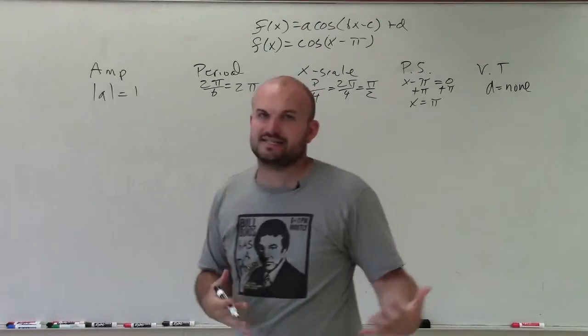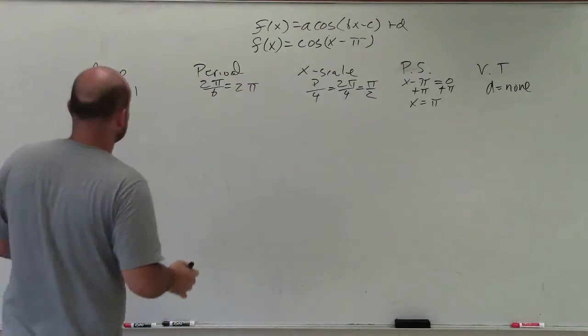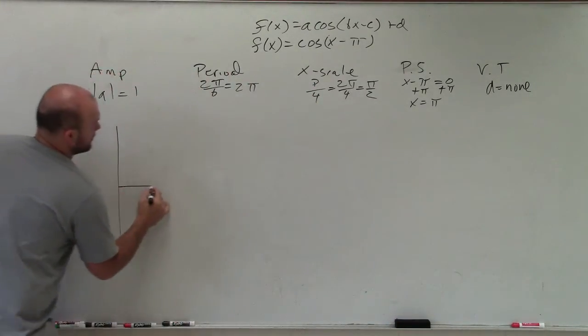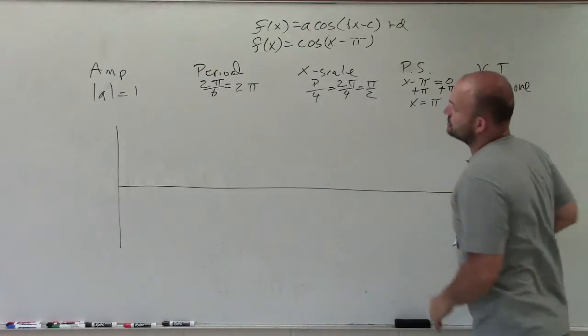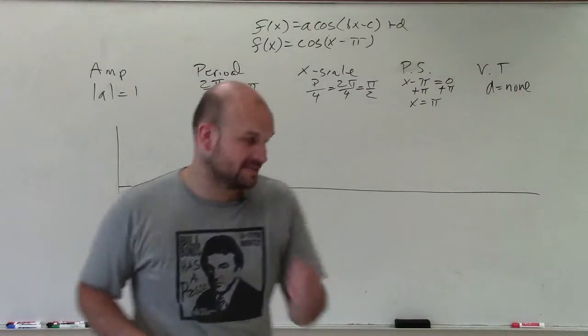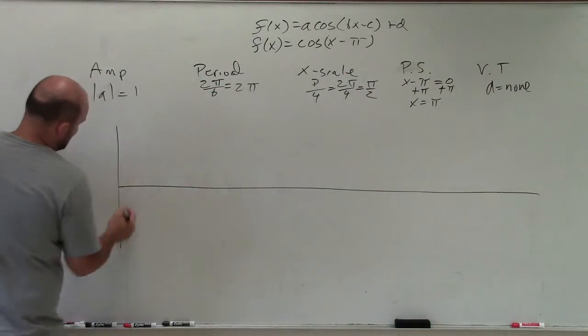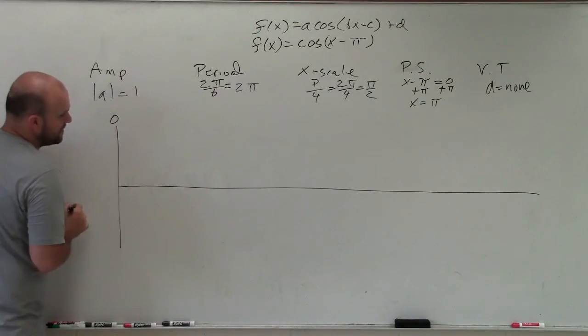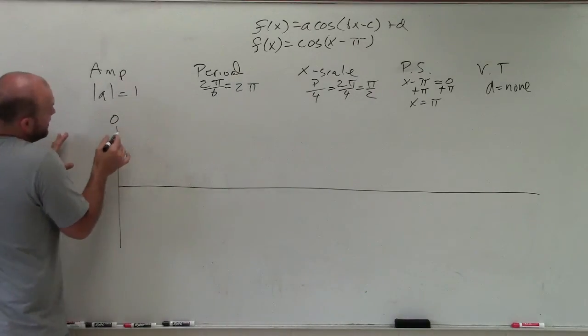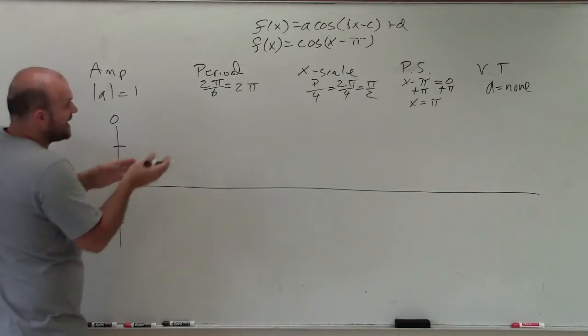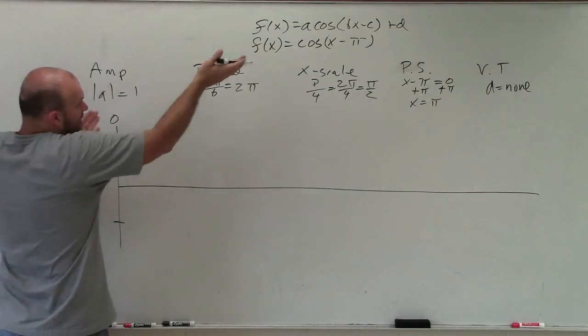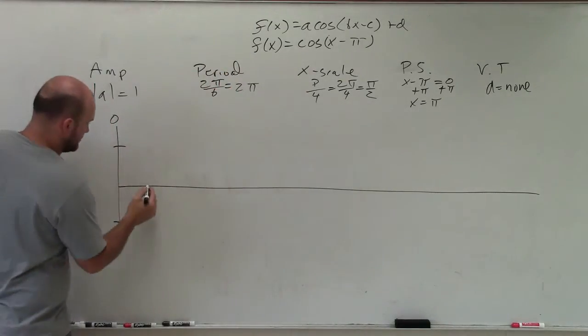So to graph this, what I'm going to do is graph the parent function as well as our new function, all on the same axis. So our parent function, if you remember, let's pretend here is 0. Our parent function has an amplitude of 1 to negative 1, and it has a period of 2π. And remember, there's four x-scales, right? So 1, 2, 3, 4.